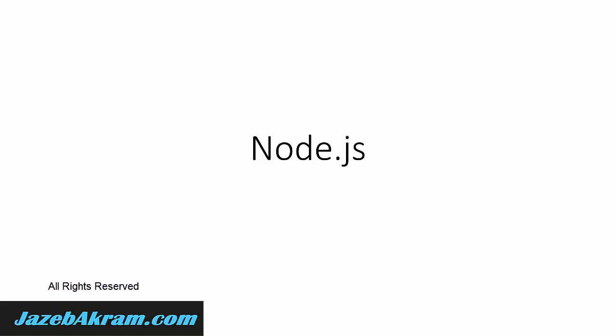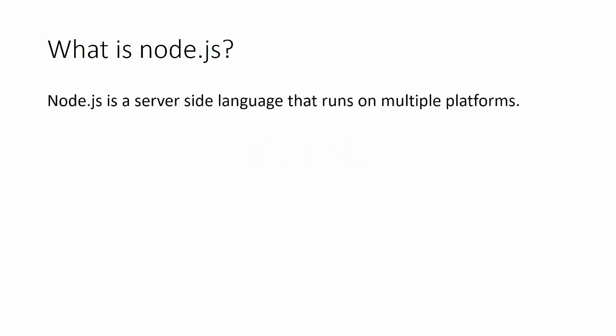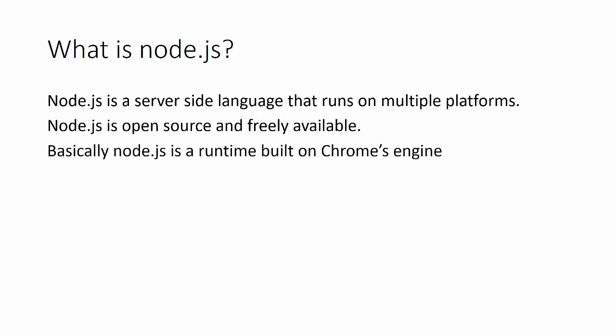In this lesson, I'm going to give you some knowledge about the Node.js framework. Node.js is a server-side scripting language that runs on multiple platforms — Windows, Macintosh, Unix, and Linux-based systems. It's completely free and open-source. The Node.js compiler was written in C++, and essentially Node.js is a runtime built on Chrome's V8 JavaScript engine. The JavaScript engine converts JavaScript code into low-level code that a machine can easily understand.